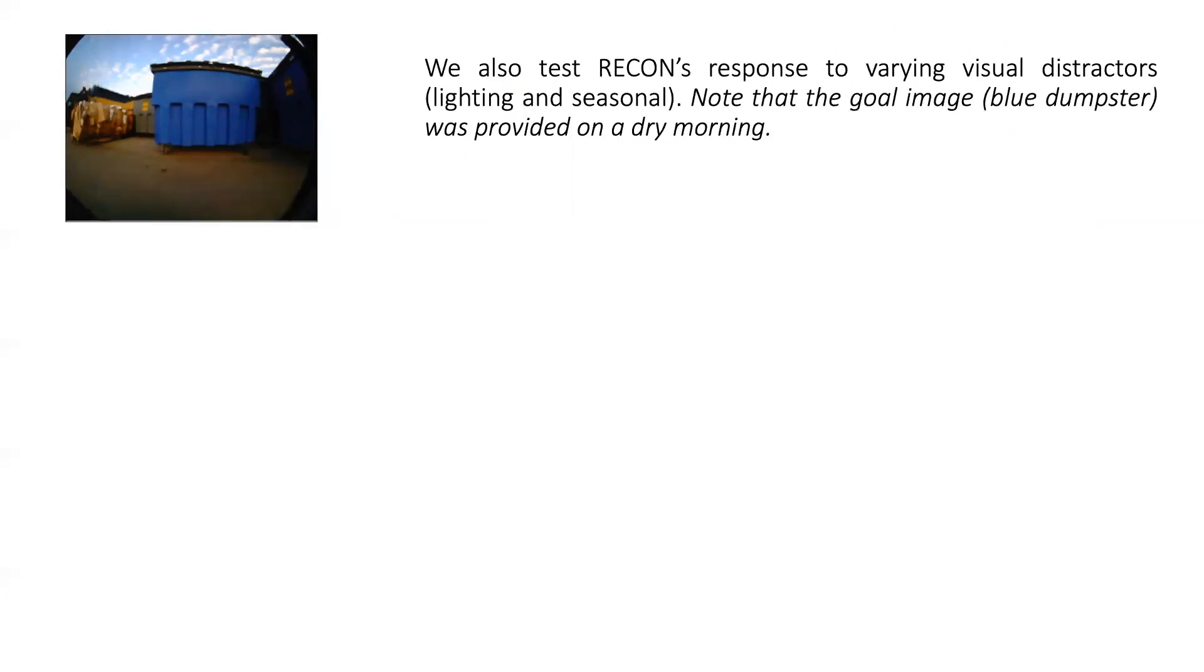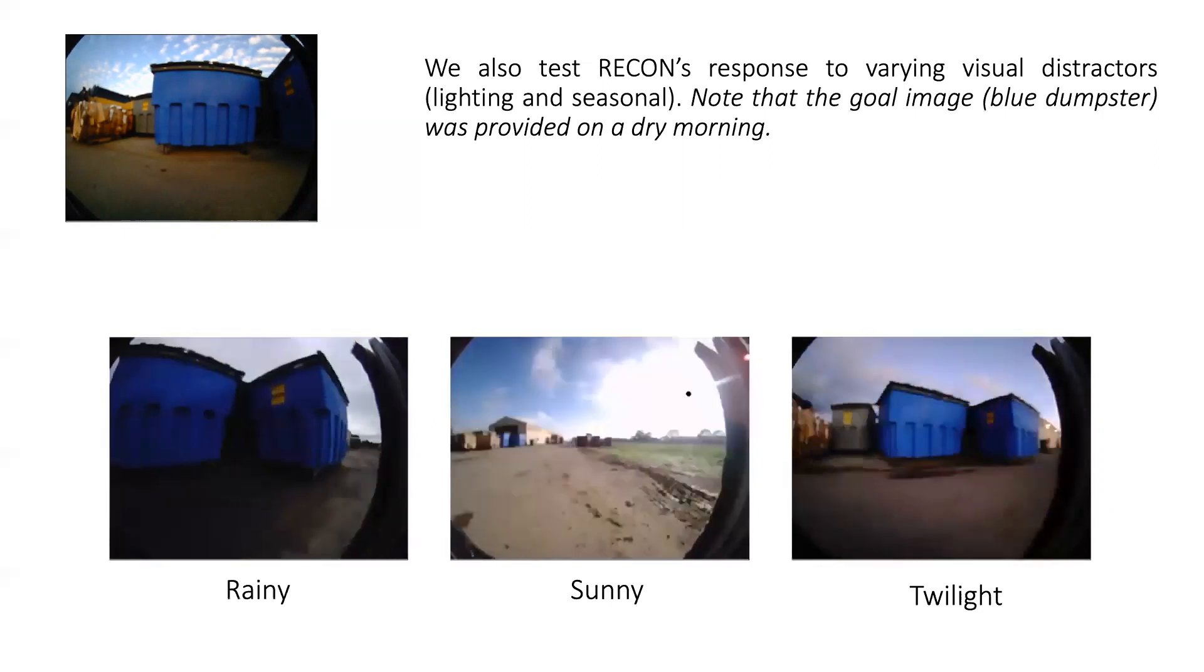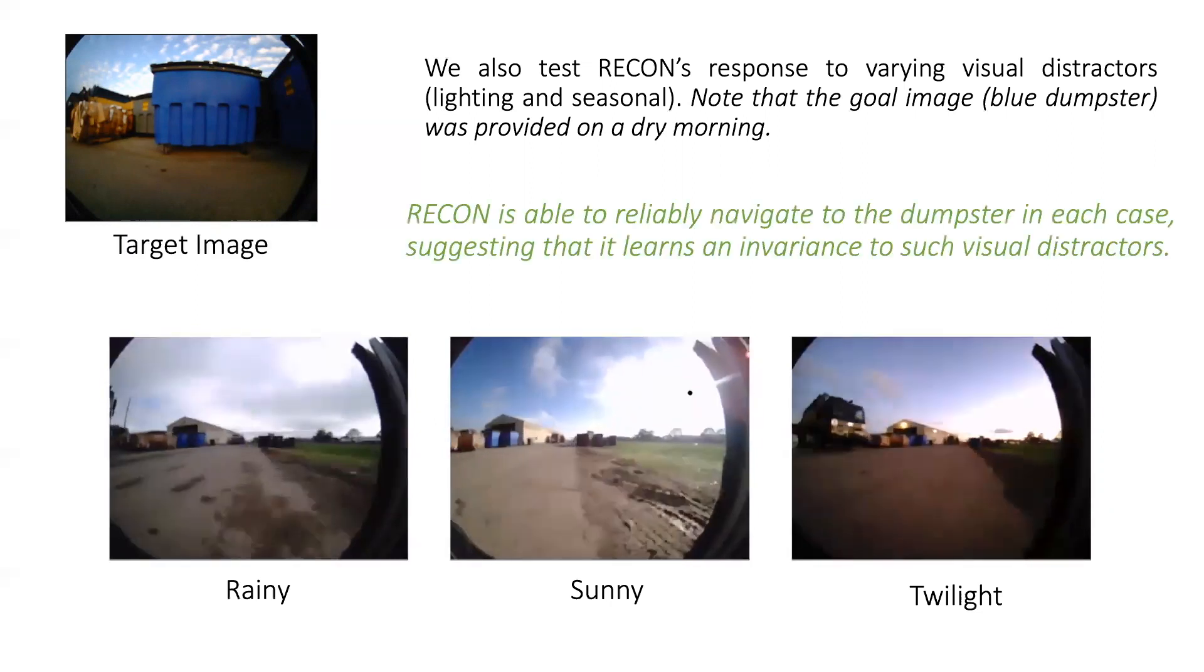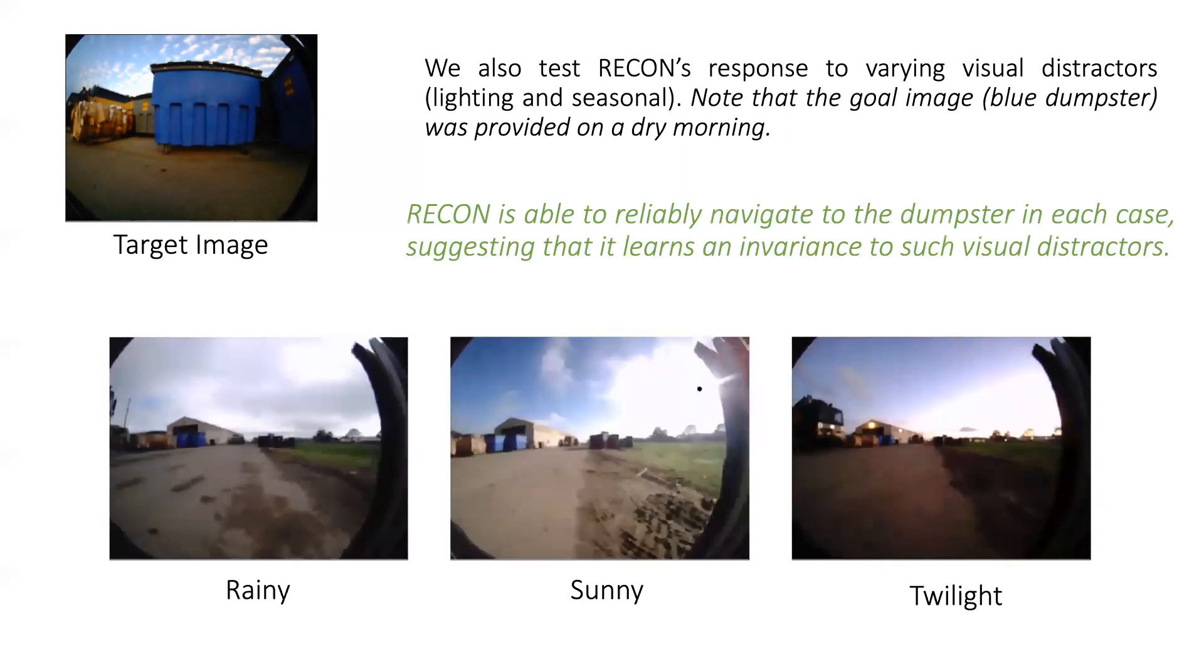We also test RECON's ability to navigate to the discovered goal under appearance changes during rain, bright sunshine, or sundown. We hypothesize that the information bottleneck learns a compact representation by discarding visual distractors like lighting changes, enabling the successful performance of RECON.